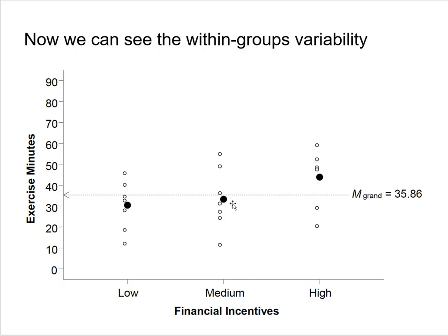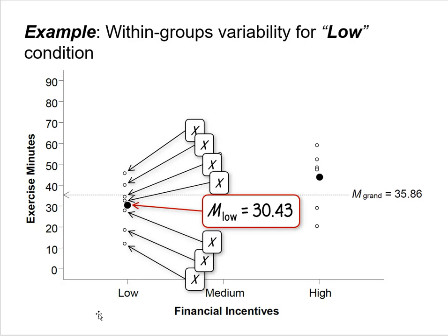Looking at the medium incentive condition, there are also seven dots in that cluster, and individual scores deviate from the group mean. This also represents within-groups variability. Focusing more closely on just the low incentive condition: the mean for the seven people was 30.43, and each individual dot represents a person's score on the dependent variable, showing the within-groups variability for that condition.